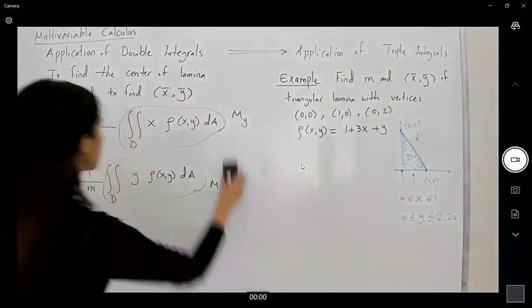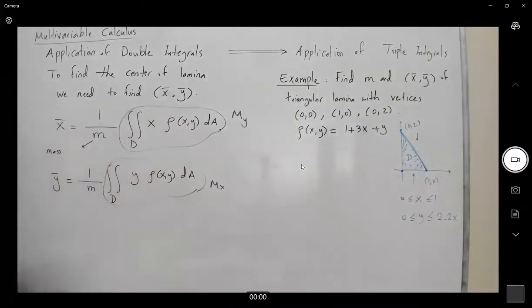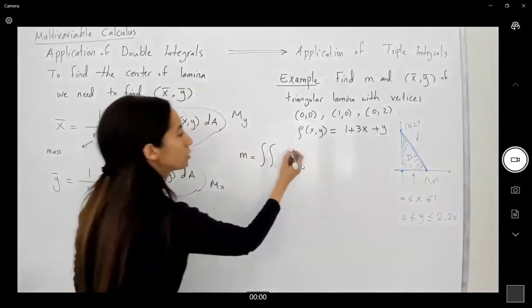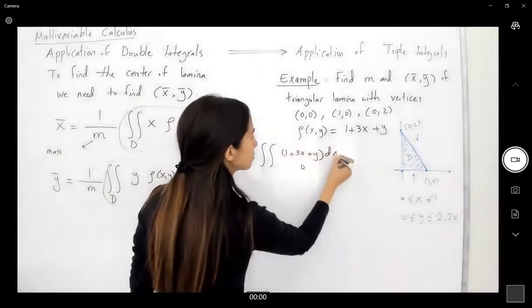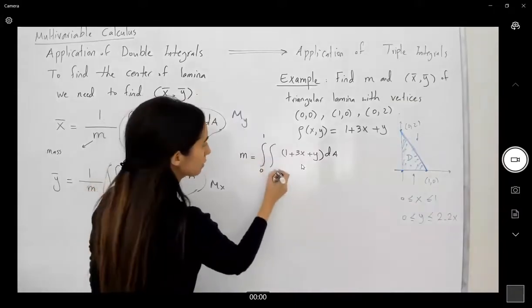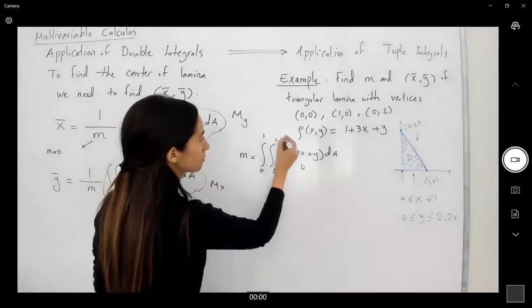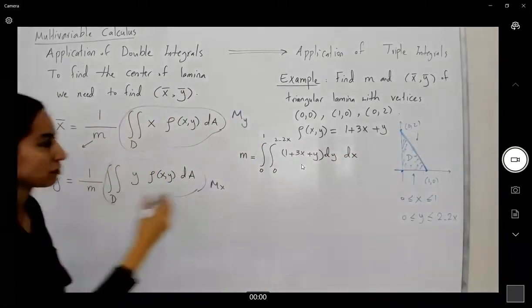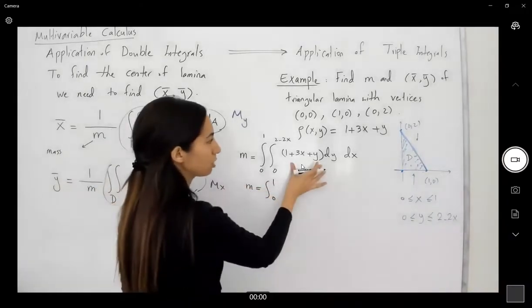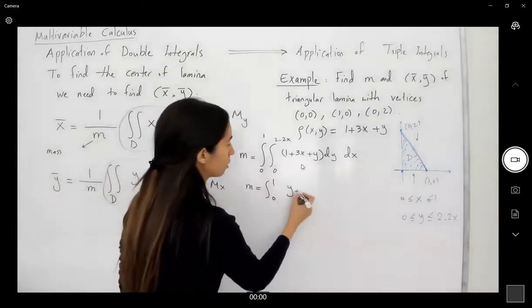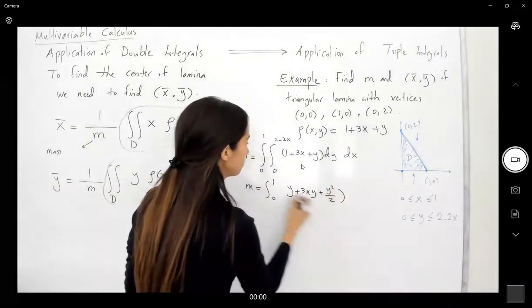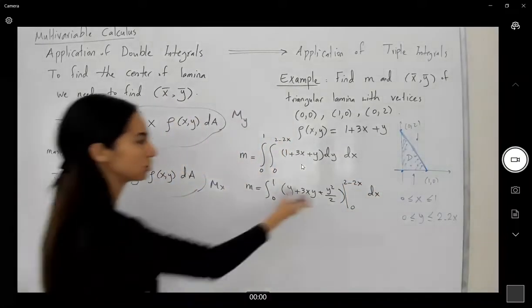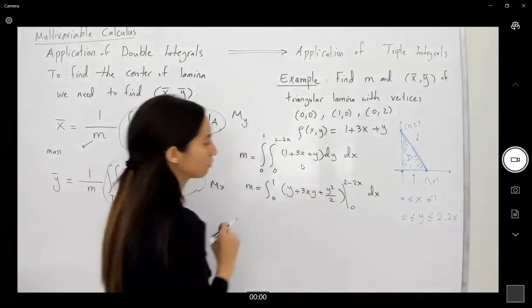So let us find the mass first, then we'll work with the x-coordinate and y-coordinate. To find mass, mass is equal to the double integral of the density — which is 1 + 3x + y — dA. Your x ranges between 0 to 1, and your y is between 0 to 2 minus 2x. So here you have dy for the inner integral and dx for the outer integral.